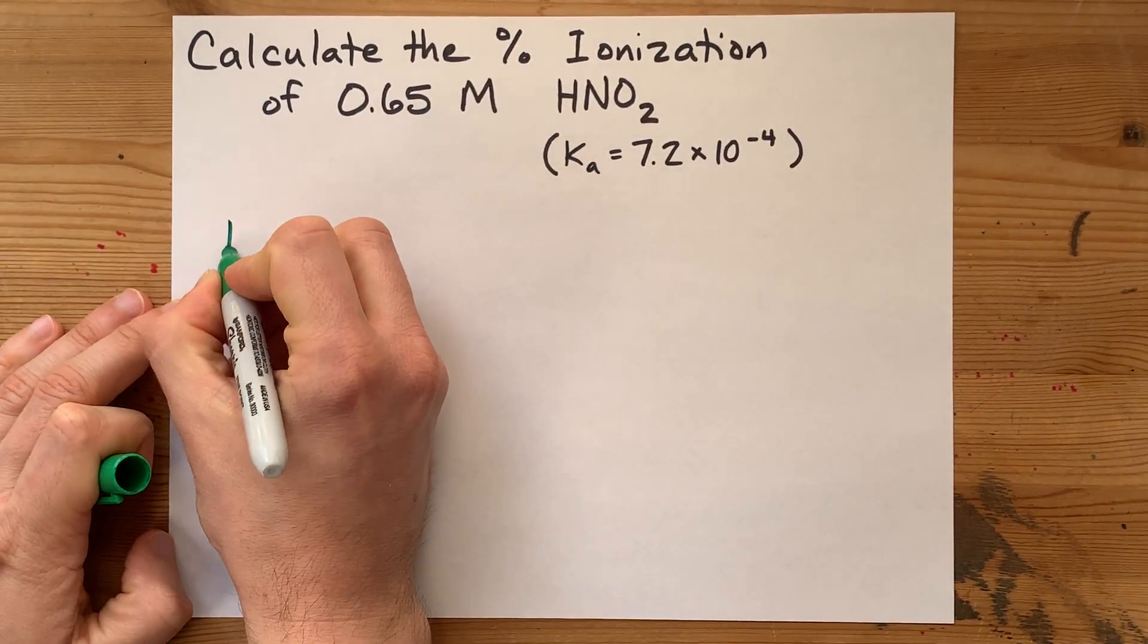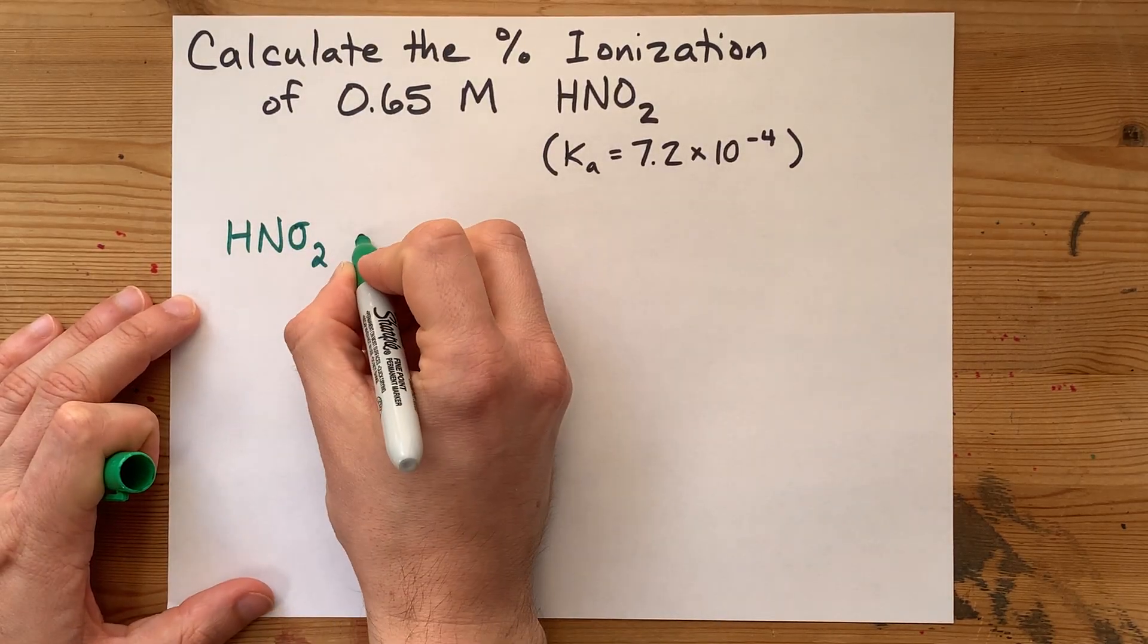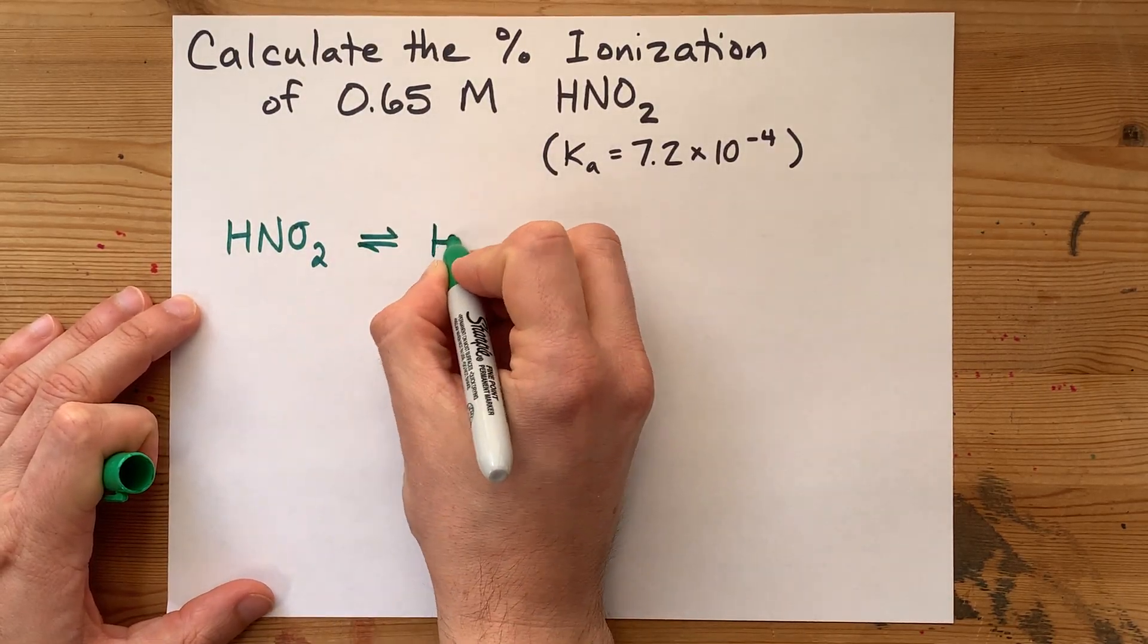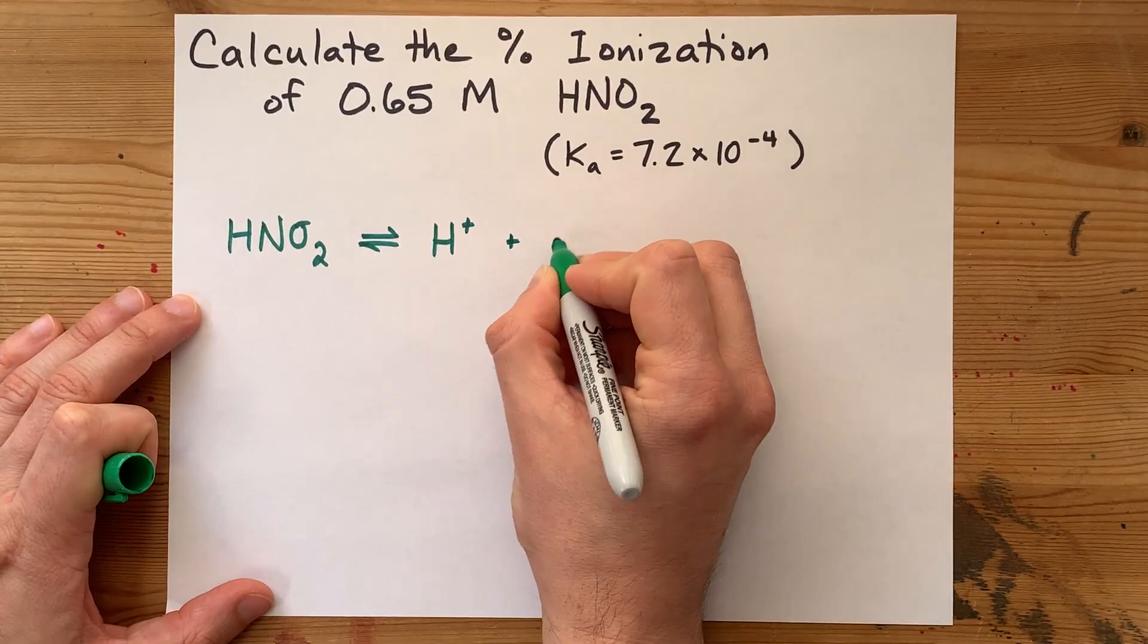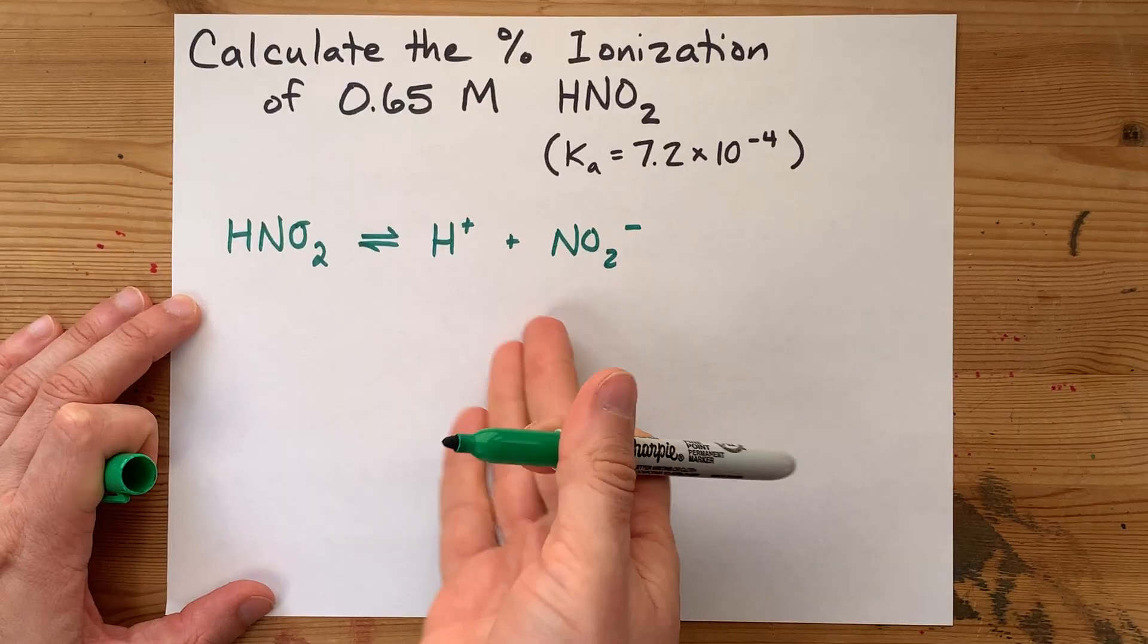Percent ionization is asking what fraction of those molecules, when you dissolve it in water, will break apart to give you the H pluses and NO2 minuses. It's the fraction that ionize.